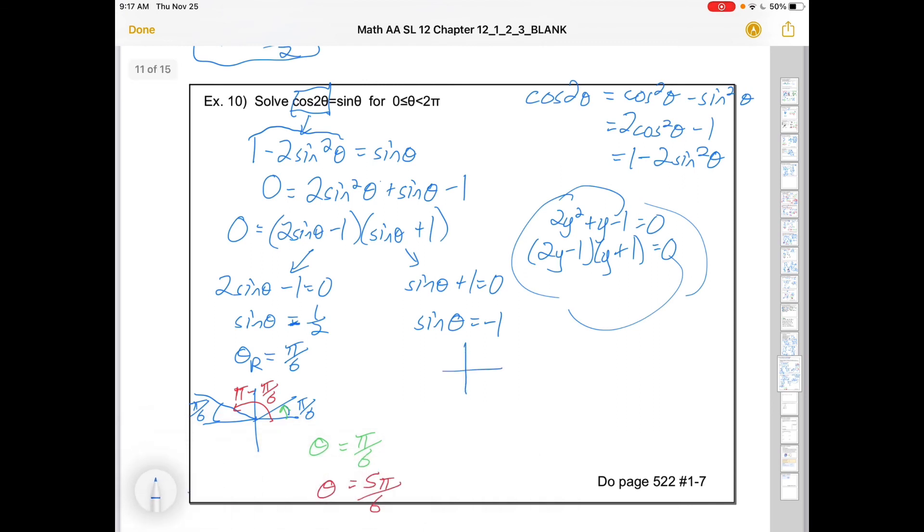Now again, this is one where we've got a sine value of 0, 1, or -1. Sine is -1 right here. Which would be at 1π/2, 2π/2, 3π/2. So θ is 3π/2. Those are our three solutions in this case.